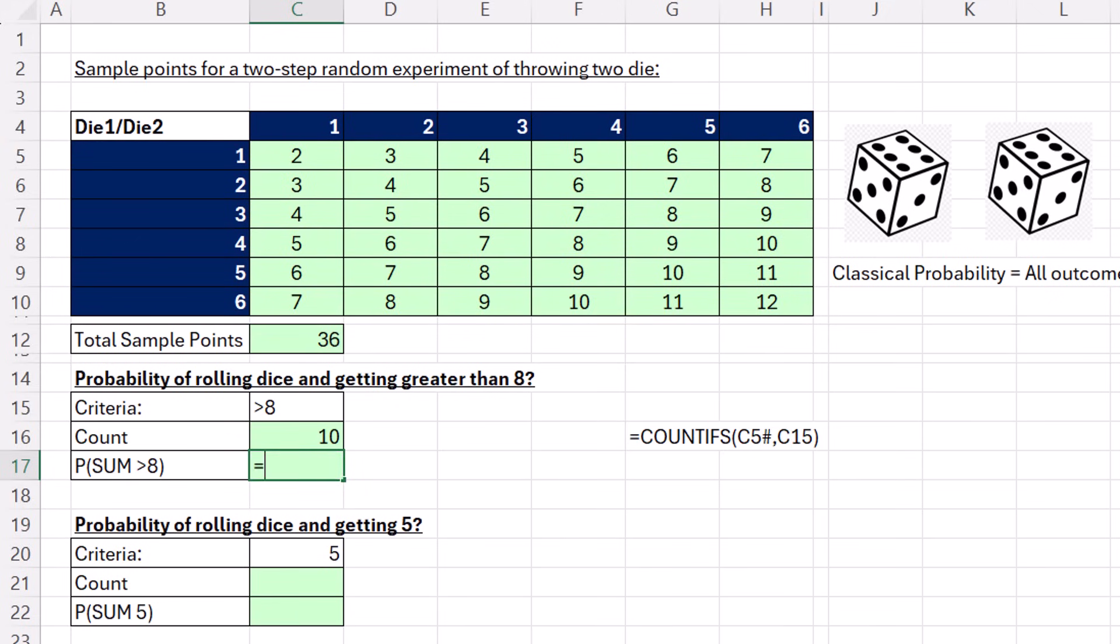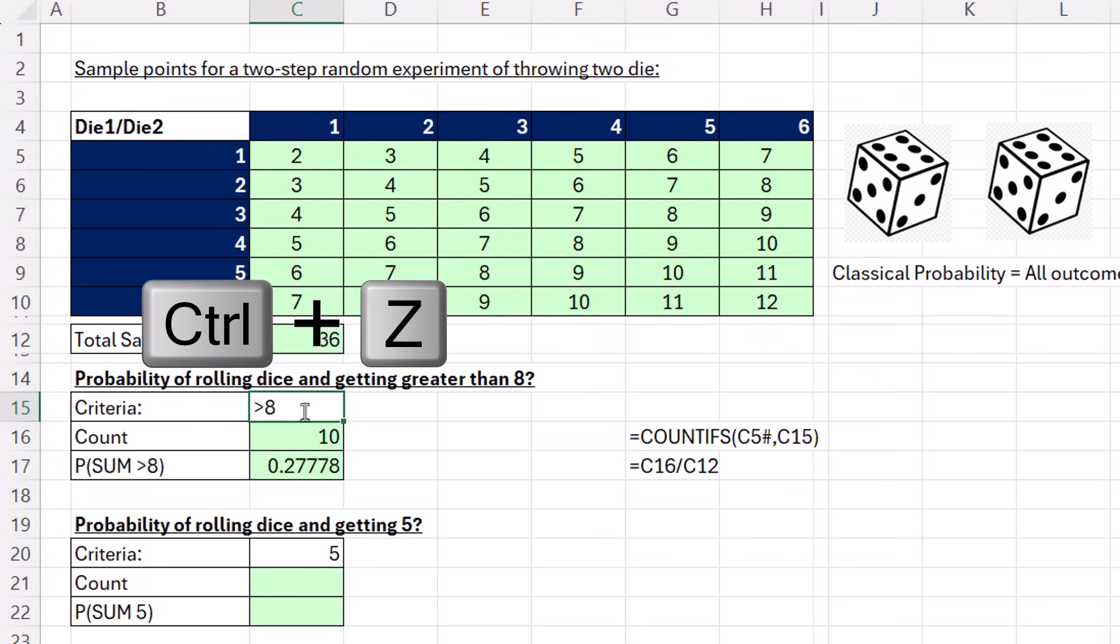Now to calculate the probability equals sign, remember arrow keys are fast, so up arrow divided by, ten is the numerator, thirty-six is the denominator. And we get 0.278. If we change this to greater than five, instantly our formulas update. Control Z.